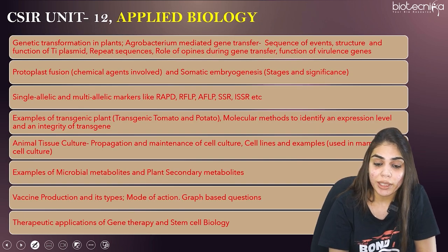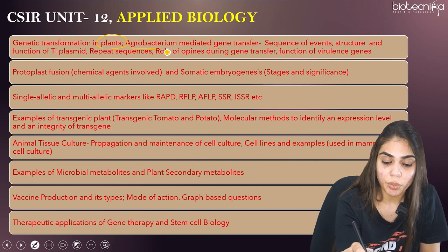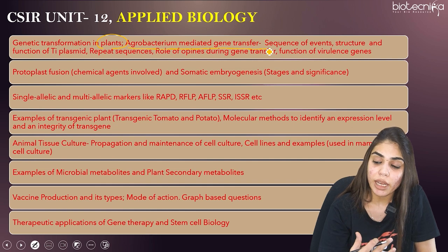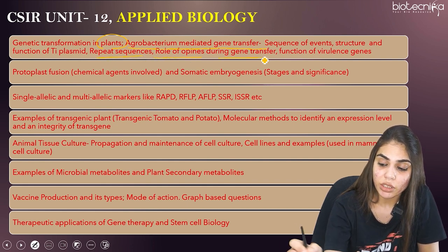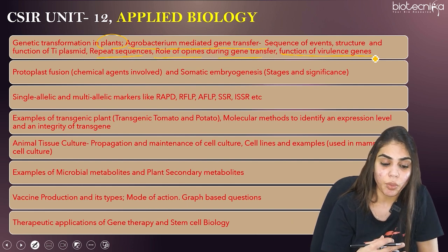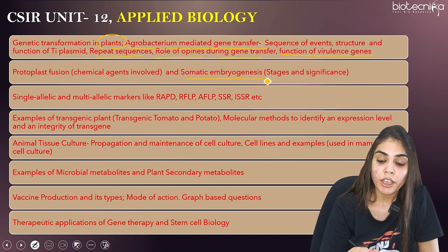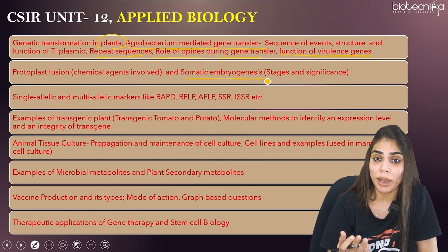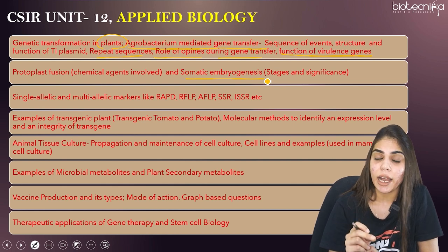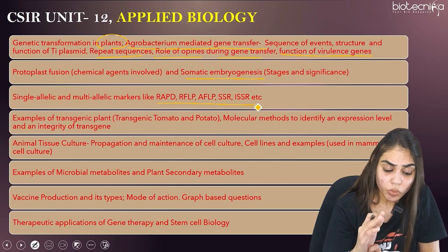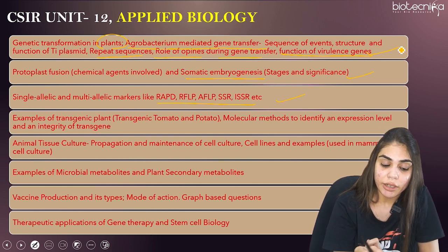Unit 12 is Applied Biology. First, prepare genetic transformation in plants — Agrobacterium-mediated gene transfer, Ti plasmid structure and function, inverted repeat sequences, the role of opines, and the function of virulence genes. Next is protoplast fusion — chemical agents involved and stages of somatic embryogenesis. Also cover molecular markers — RAPD, RFLP, AFLP, SSR, and ISSR — knowing the difference between multi-allelic and single-allelic markers. Know examples of transgenic plants and molecular methods to identify transgene expression.